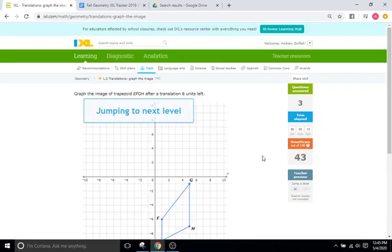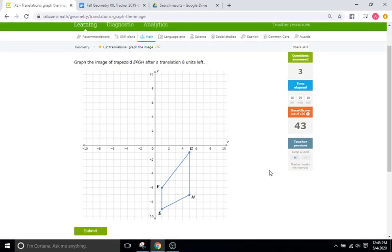But as we skip forward in this iXL, I mean that's it. It already doesn't let me jump past a smart score of 43 because all the problems after this are the same. You're just translating either to the left or up or down to the right or two of each. Okay.